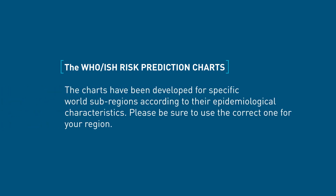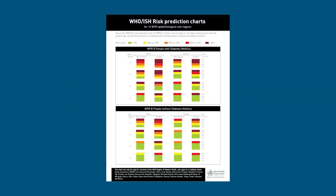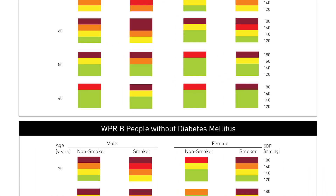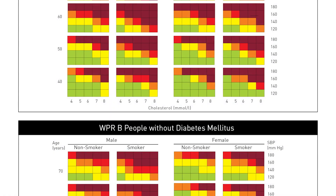The charts have been developed for specific world sub-regions according to their epidemiological characteristics, so you have to make sure you are using the correct one, which for the Pacific Island countries is the Western Region B or WPRB, as shown here at the top and bottom of the charts.